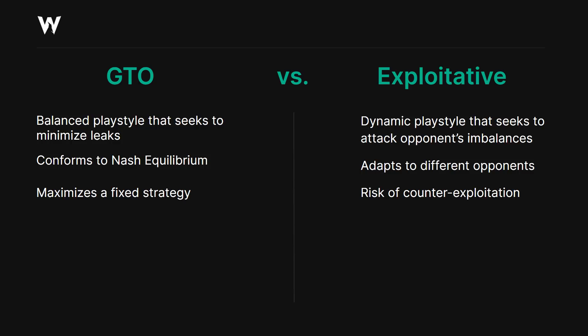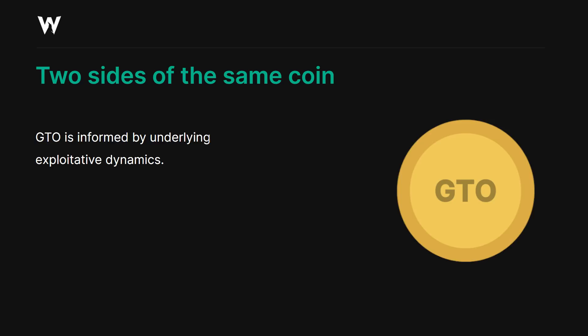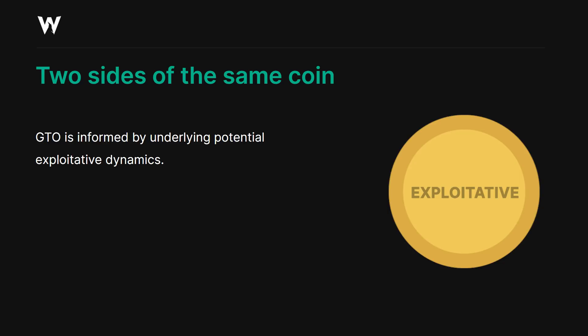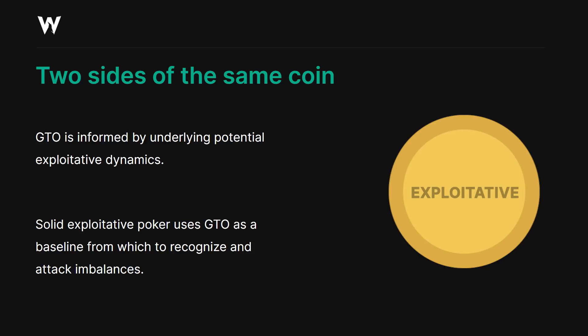Now these two may seem adversarial, but they're two sides of the same coin. GTO is informed by and created by the underlying potential exploitative dynamics. On the flip side, solid exploitative poker uses GTO as a baseline from which to recognize and attack imbalances. You can never truly understand one strategy without understanding the other. You need at least some basic exploitative principles to understand where the solver is coming from, to understand why GTO works in the first place.